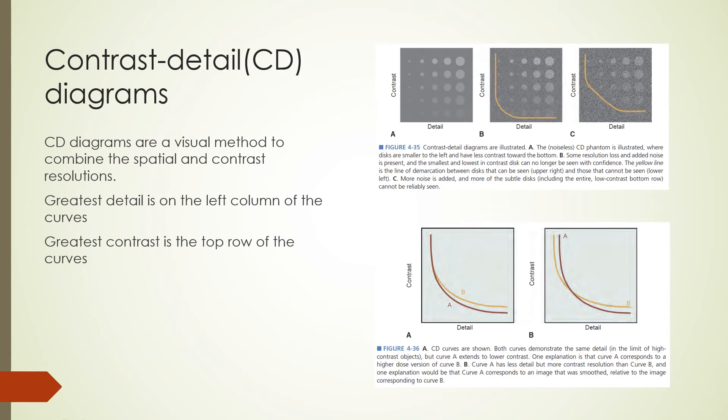In a previous lecture, we learned about spatial resolution and contrast resolution as if they were separate entities, but both of these quantities together are important on any given image. In particular, it does not matter if the imaging detector has excellent spatial resolution if there is too much noise in the detector and the statistical integrity of the image is not sufficient to detect a small object. We can understand the relationship between spatial and contrast resolution by using a conceptual visual method called a contrast detail diagram. A few contrast detail curves are shown on this slide. On the figures shown, greatest detail is on the left column of the curves and the greatest contrast is the top row of the curves.